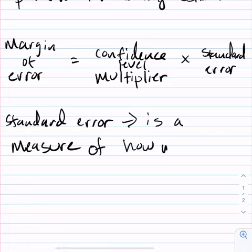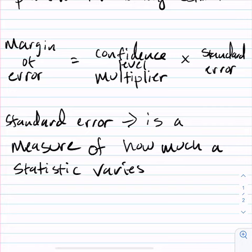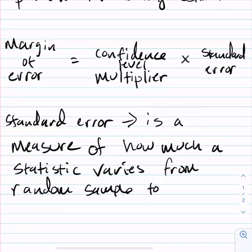This is going to come from that information we learned from the sampling distribution, and now that we have a statistic, that sampling distribution information is going to help us to know how to measure how much we expect this statistic to vary from random sample to random sample.